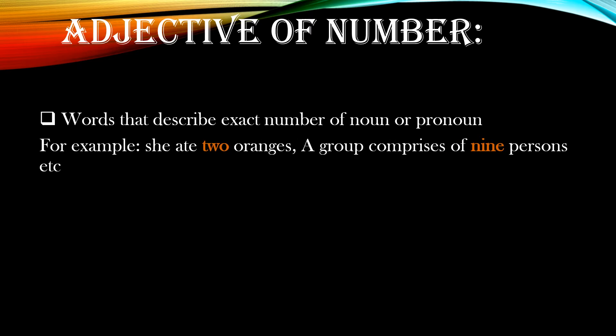Moving on — adjective of number. These are the words that describe the exact number of a noun or pronoun. Note the word 'exact' here. For example, 'she ate two oranges' — two is the exact number of oranges she ate. Similarly, 'a group consists of nine persons' — nine is the exact number of persons a group consists of. Remember, whenever you have an exact number describing a noun or pronoun, it is known as adjective of number.